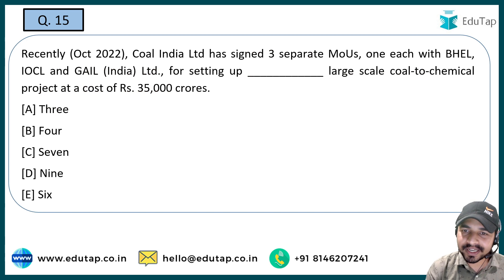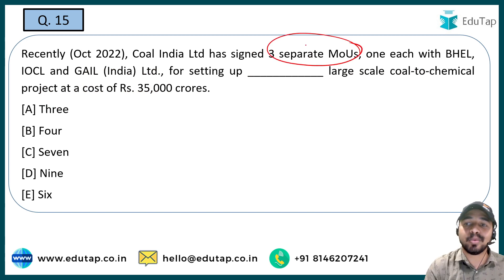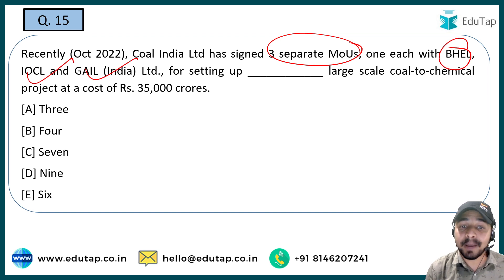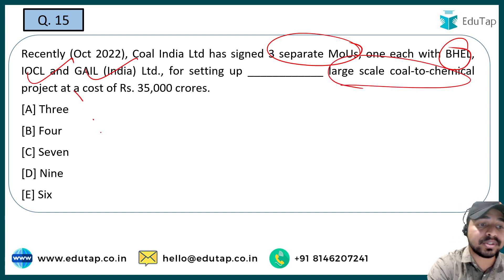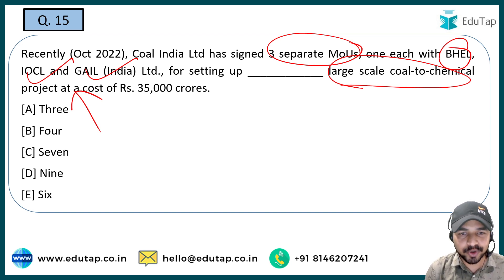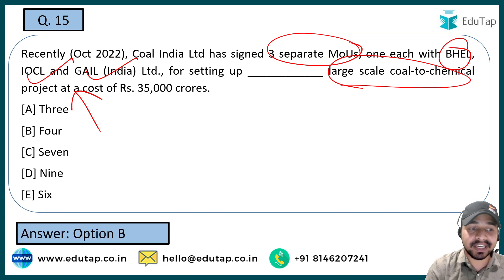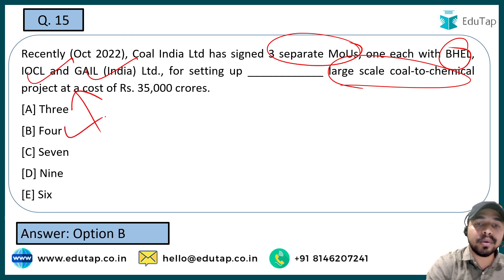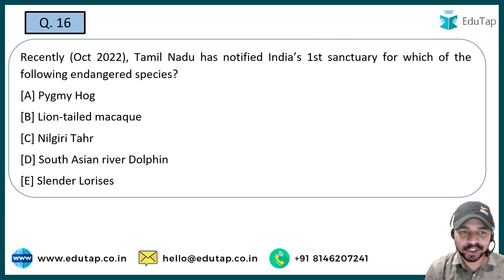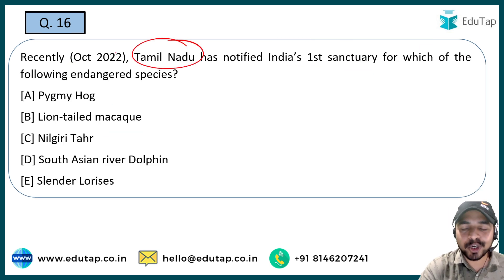The next question: Coal India Limited recently signed three separate MOUs, one each with BHEL, IOCL, and GAIL. The question asks how many large-scale coal-to-chemical projects will be set up under these three separate MOUs. The answer is basically four projects which will be set up by Coal India Limited.